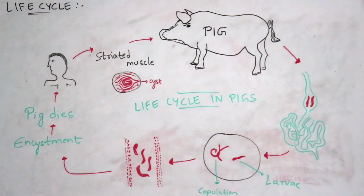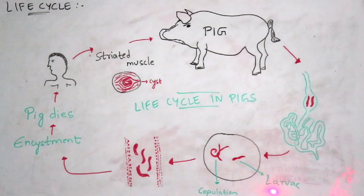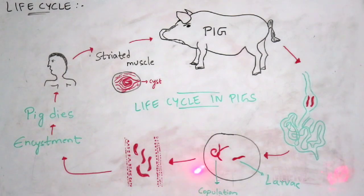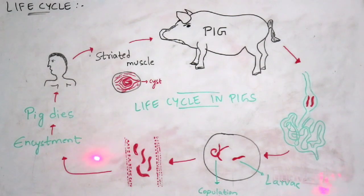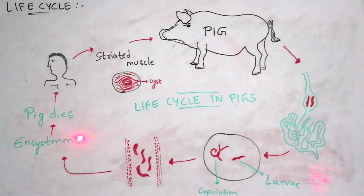Within the bloodstream, encystation takes place. The larvae in the small stage transform into the next stage — encysted larvae — by the process of encystation. Then the pig dies.